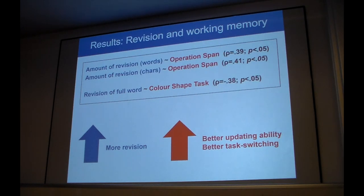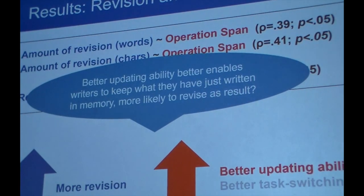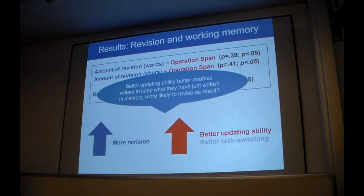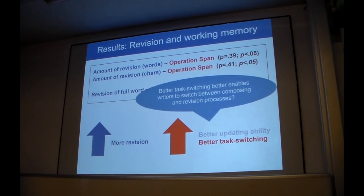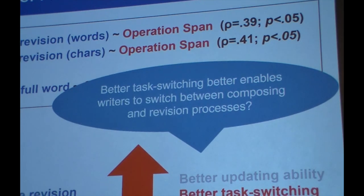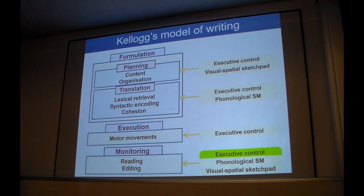Revision and working memory. What we found is that more revision overall and also revision of words was related to better updating ability and better task switching ability. Again, if we have better updating ability, it means that we're better able to remember what we've just written, and if we remember that better, maybe we're more likely to revise it because it's still in our memory. So that could be one way to explain this result. We also found that those who had better task switching ability enabled writers to revise more. Maybe, again, they were able to better switch between composing and revision processes. And again, when it comes to monitoring, executive control in Kellogg's model was also posited.